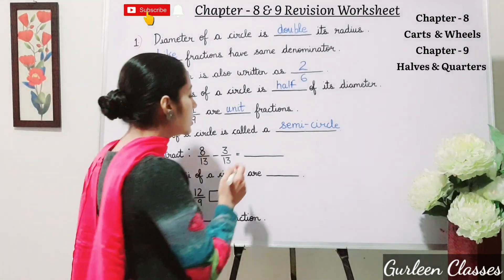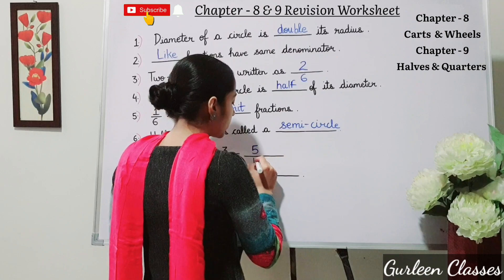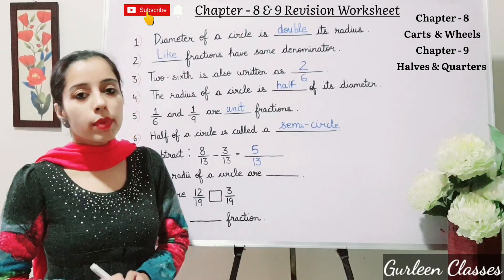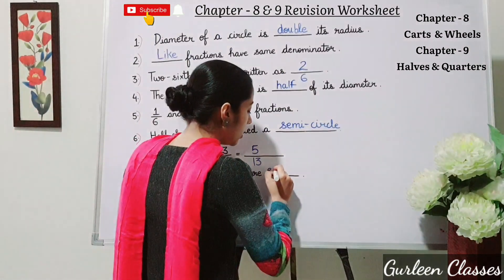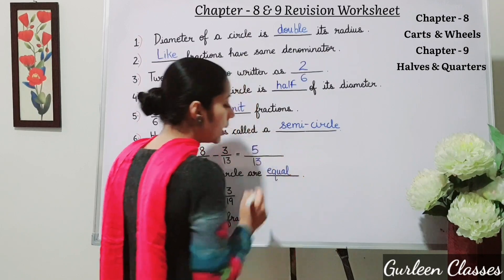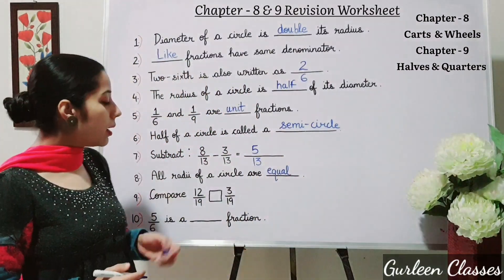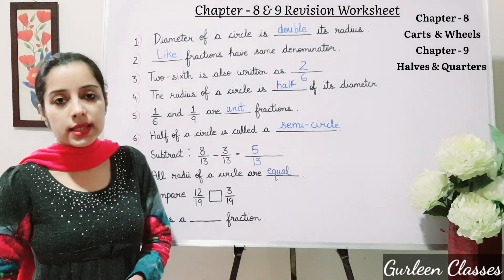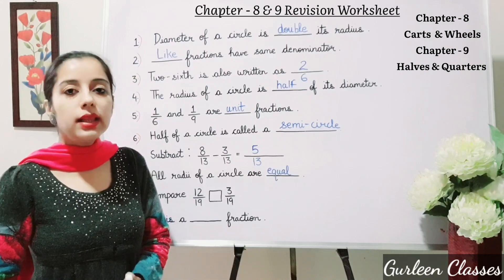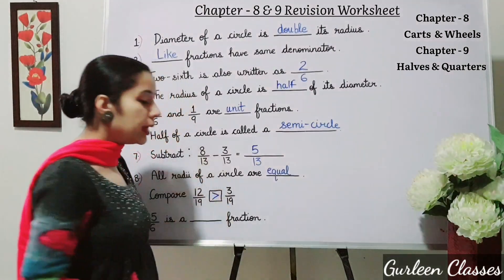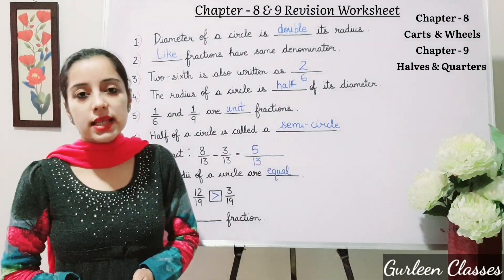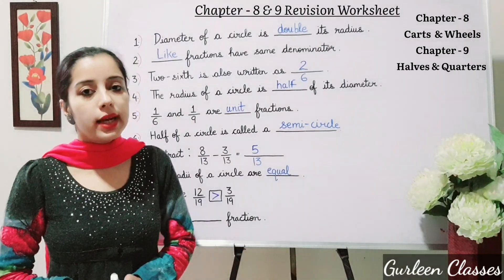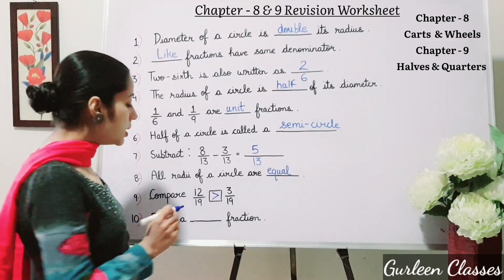Next: all radii of a circle are equal — write here 'equal'. Next, compare 12 upon 19 and 3 upon 19. Here the denominator 19 is the same; numerator 12 is greater than 3, so 12/19 is greater. Next: 5 upon 6 is a dash fraction. Here numerator 5 is less than denominator 6, so it is a proper fraction — write here 'proper fraction'.